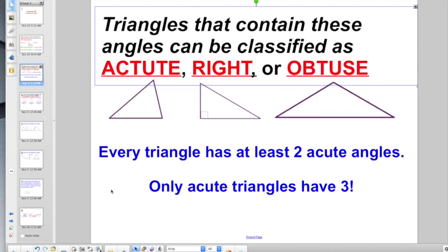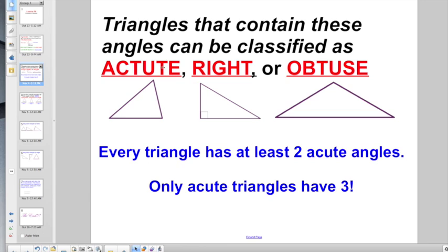So it helps if you do, because triangles that contain these angles can be classified as an acute triangle, a right triangle, or an obtuse triangle. And I got a little reminder here that I switched colors on. It says every triangle has at least two acute angles. And that's true, right?